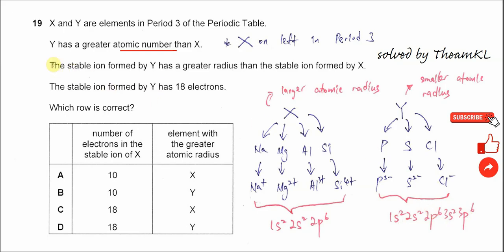Now let's get back to the statement: the stable ion formed by Y has greater radius than the stable ion formed by X. Let's say Y is chlorine, so the stable ion formed by Y is chloride. And let's say X is phosphorus, because it's on the left-hand side compared to Y, and it will produce phosphide.